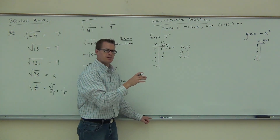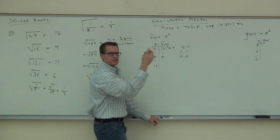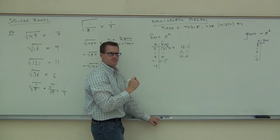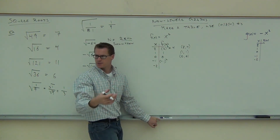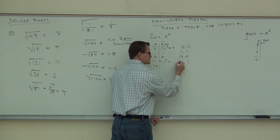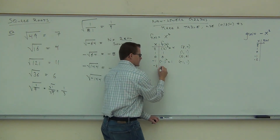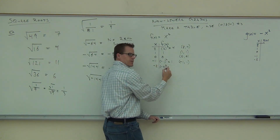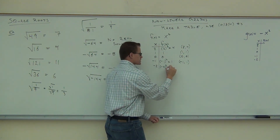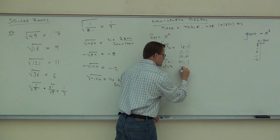Pay close attention here. When you plug in negative one to x squared, it says you're taking negative one in parentheses, squared — you're taking all of negative one and squaring it. Negative one times negative one gives you positive one, so our point is (-1, 1). Similarly, negative two squared: you're taking negative two times negative two — that's a negative times a negative, it's a positive — so we get (-2, 4).